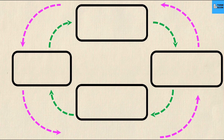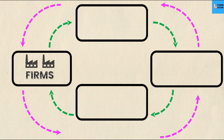So left completely blank, the circular flow diagram looks like this. There's four things that are happening and you'll notice that there's a set of arrows that are moving clockwise and there's a set of arrows that are moving counterclockwise. The important thing to remember is that we are looking at two groups of people: firms and households.